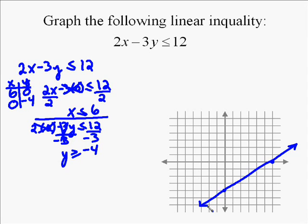We then test a point. We're going to test (0, 0). When we test (0, 0) into the inequality, put 0 in for x and 0 for y, which leaves us with 0 ≤ 12, which is a true statement.